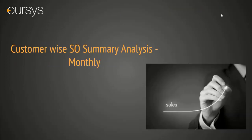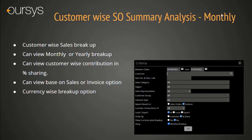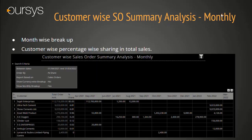Customer-wise SO Summary Analysis. This is an MIS report where you can view Sales Order as well as Invoice-wise Breakup on a Monthly or Yearly basis. In this report, you can see Customer-wise Contribution in selected criteria. Also, you can filter with Currency-wise as well. Here you can view the monthly breakup of all the sales order values in terms of customer. Based on this report, you can understand which customer gives more orders compared to others.